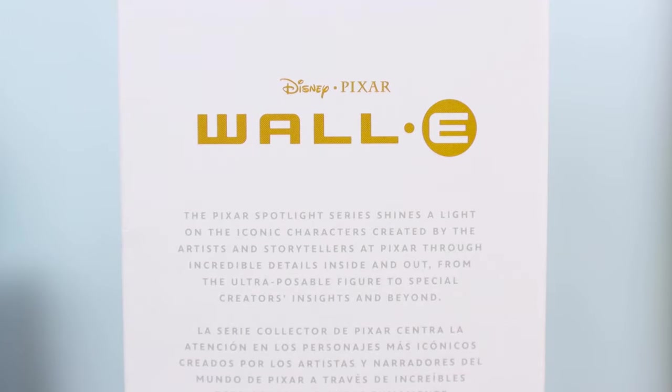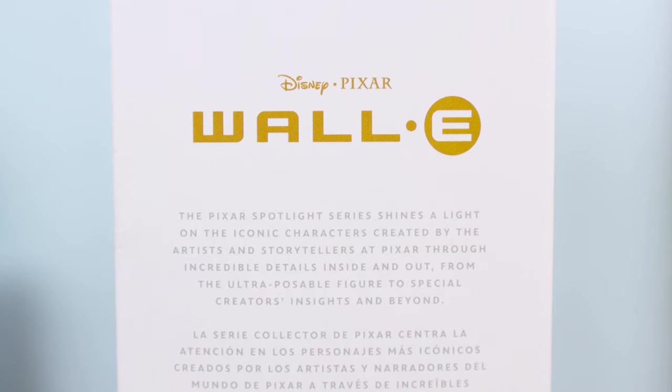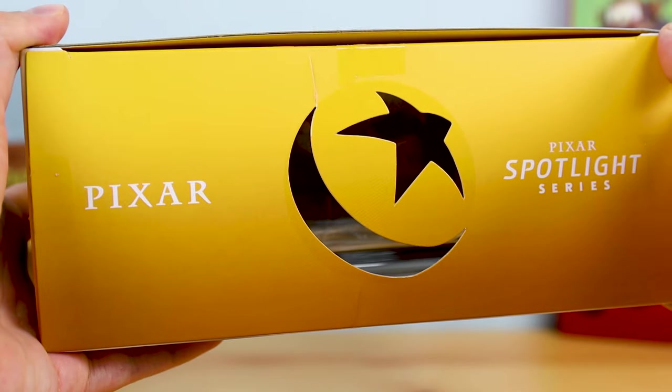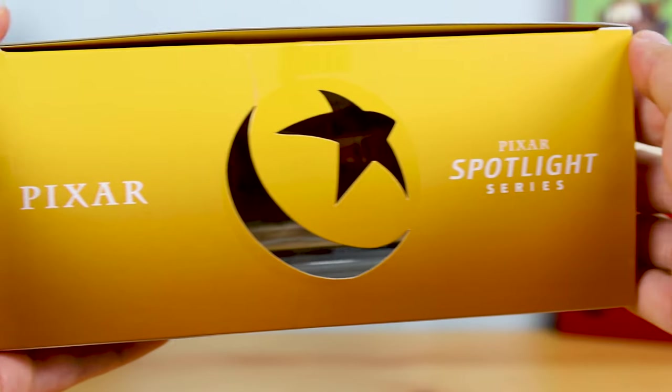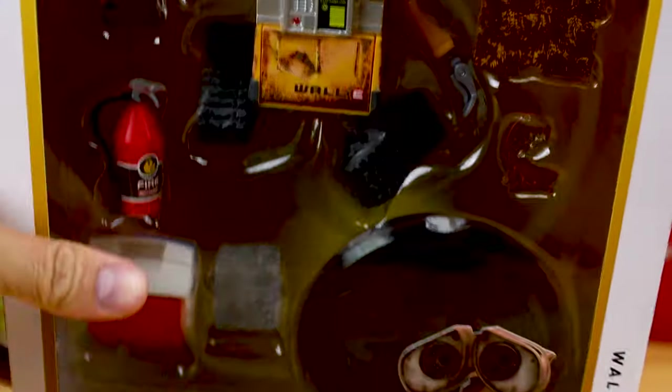On the right side of the box, you can pause and read it if you haven't yet, this is the exact same snippet about Mattel's Pixar Spotlight Series found on every release in this line. And here's the top of the packaging once again, and like usual, there's the Pixar and Spotlight Series logos on either side, as well as a Pixar ball cutout to kind of help light the figure inside when on display.